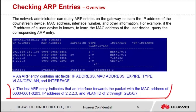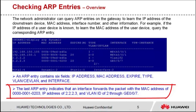The last ARP entry indicates that an interface forwards the packet with the MAC address of 0000-0001-0203, IP address of 2.2.2.3, and VLAN ID of 2 through GE0/0/7.